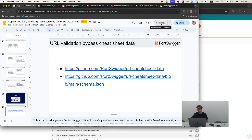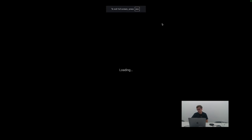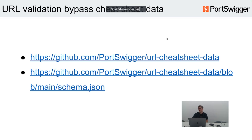We put all of this data in our GitHub repository. If you'd like, you can create any pull request to the cheat sheet data itself. We also have a schema file that helps you identify which keys are mandatory and how to create a new payload. Or if you don't want to deal with the Node.js style, you can just create an issue request and I will do it.